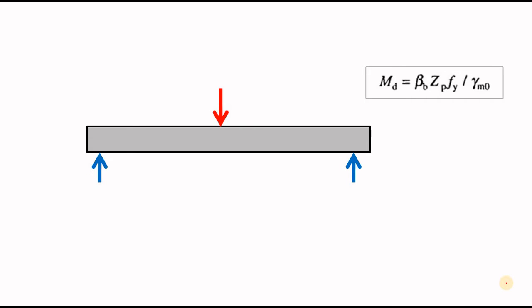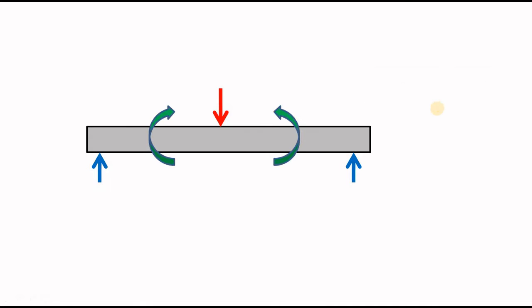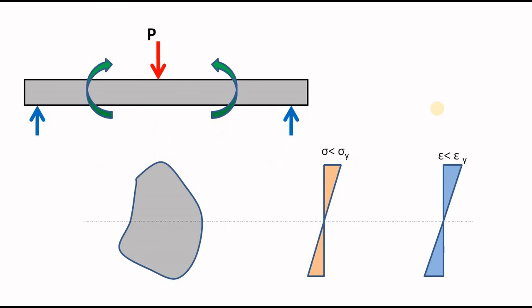Let's consider this beam which you are going to design using the limit state method — that means you are going to use ZP. Before understanding plastic section modulus, you need to know how the load affects your beam. The very first thing the load does to your beam is produce a moment. Next, this moment produces strain at the section of your beam.